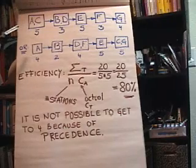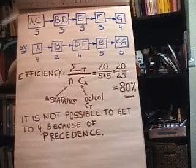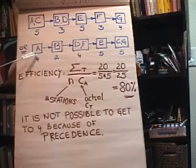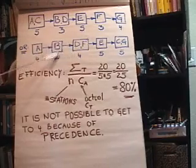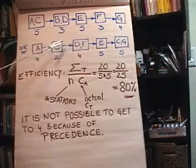We'd really like to get it down to four, but in this example problem it's impossible to get it down to four because of those precedence relationships. Here's another possibility: A could stand alone at one workstation, total of four, then B total of two, and notice they'd be idle for a couple of minutes in between.